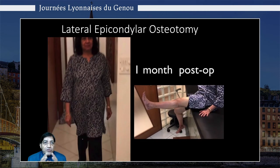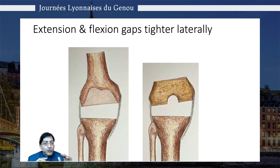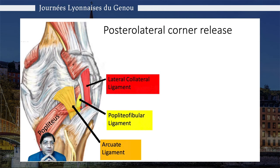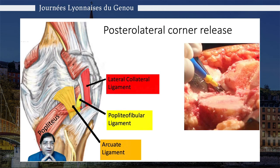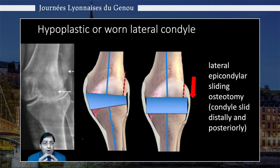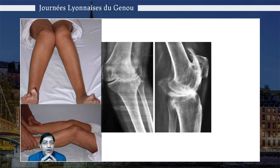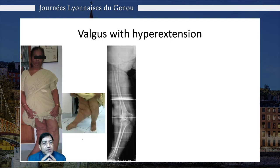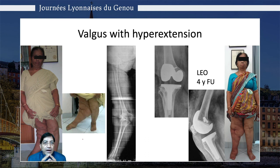If the extension and flexion gaps are both tight laterally, this requires a posterior lateral corner release, particularly of the popliteofibular ligament. If a hypoplastic or worn lateral condyle is present, we need to slide it distally as well as posteriorly, especially in long-standing flexion contractures. In this patient with valgus and hyperextension, we've done a lateral sliding osteotomy with no need for any constraint — and that's the patient at four years.